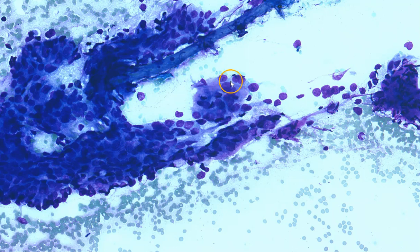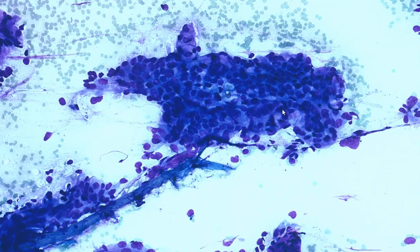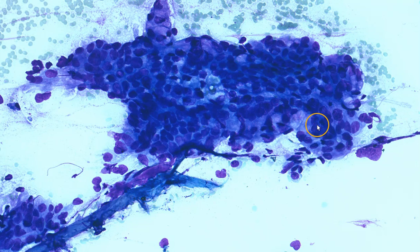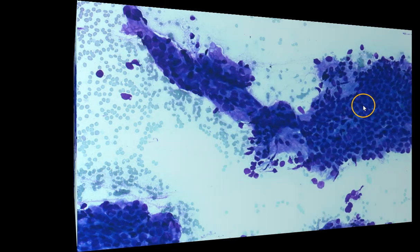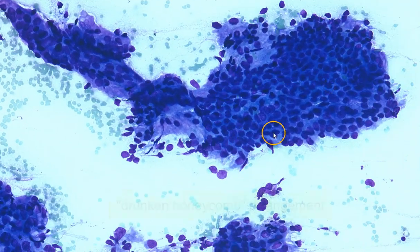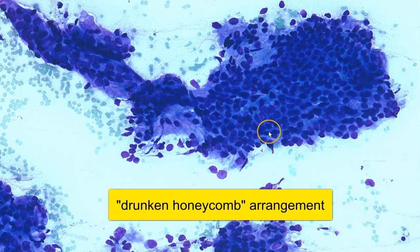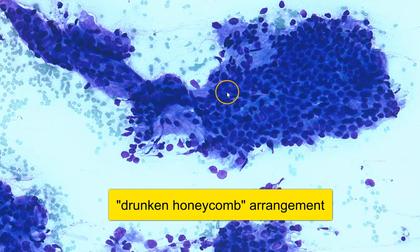There is also some degree of variation, relatively mild, in nuclear size. And here again, we can see some areas where there is nuclear overlapping, and some of the cells have somewhat lower NC ratios. This is what we would call a drunken honeycomb appearance, where you still have an architecture that is reminiscent of a honeycomb, but somewhat jumbled up and slightly disorganized.